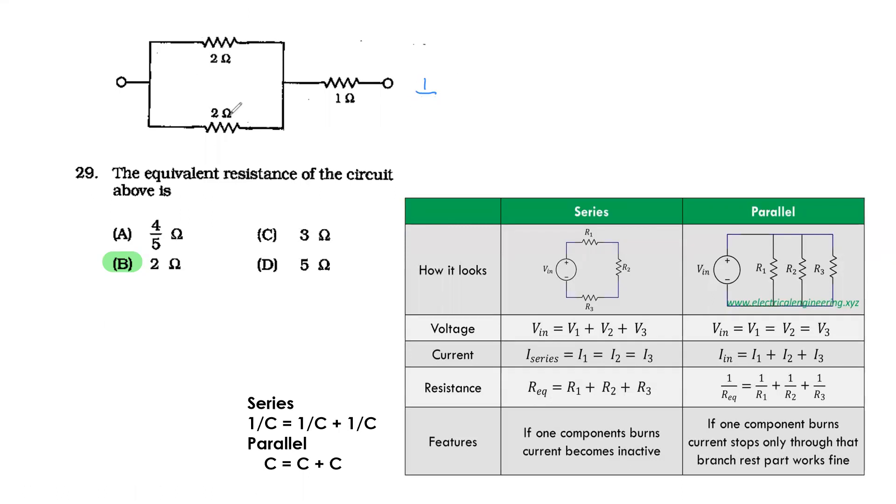Solve for the total resistance of this parallel circuit first. How do you get the total resistance? Label them. R1 and R2, so the total of R1 and R2: 1 over 2 plus 1 over 2.